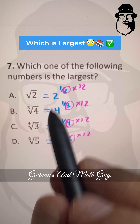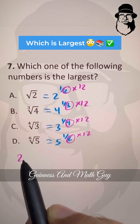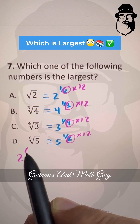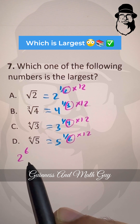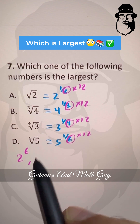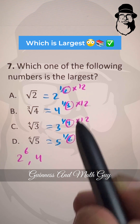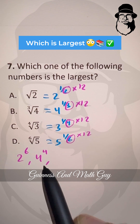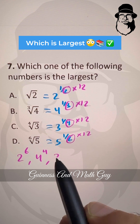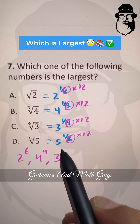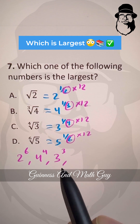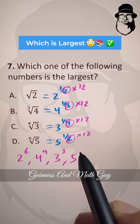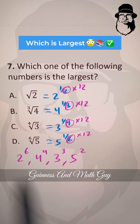And we get 2 to the power 6, since 2 times 6 is 12. Then we get 4 to the power 4, since 3 times 4 is 12. Then we have 3 to the power 3, since 4 times 3 is 12. And here we have 5 to the power 2, since 6 times 2 is 12.